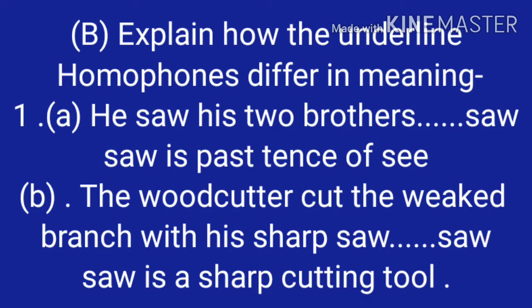Explain how the underlined homophones differ in meaning. Number one: A — 'He saw his two brothers.' Here 'saw' is the past tense of 'see'. B — 'The woodcutter cut the wicked branch with his sharp saw.' Here 'saw' is a sharp cutting tool — करवत.